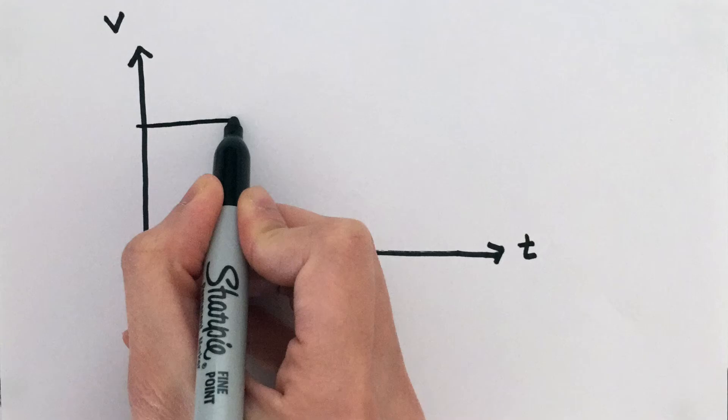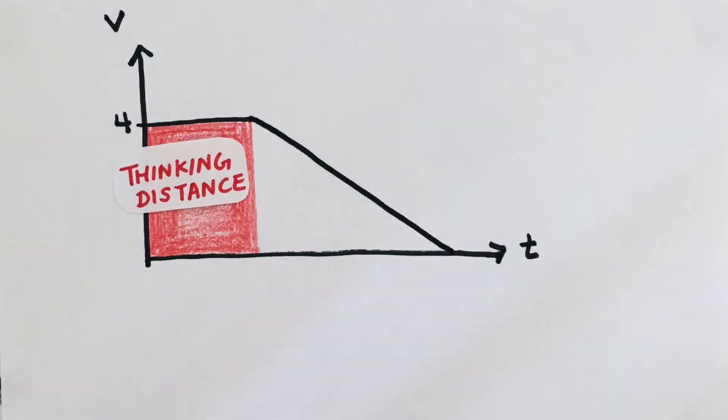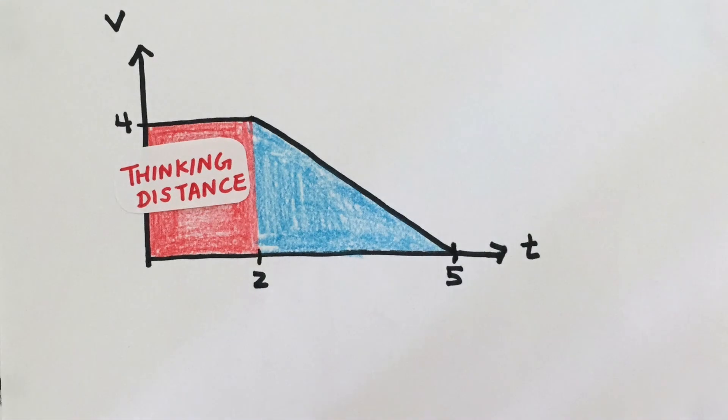Let's plot the idea of thinking distance and braking distance on a velocity time graph. During the thinking distance, the velocity remains constant. However, during the braking distance, the car gradually reduces its velocity.